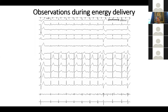Here's an example of a PVC with a superior axis, positive forces in aVL, and a precordial transition by V4, consistent with a posterior medial source. We mapped it there, and when we come on ablation, you can see the PVC goes away. But then just a few seconds into the lesion, a different PVC starts to break through with a totally different axis - inferiorly directed and aVL negative. So during ablation of the posterior medial papillary muscle, you've transitioned to an anterior medial papillary muscle source.